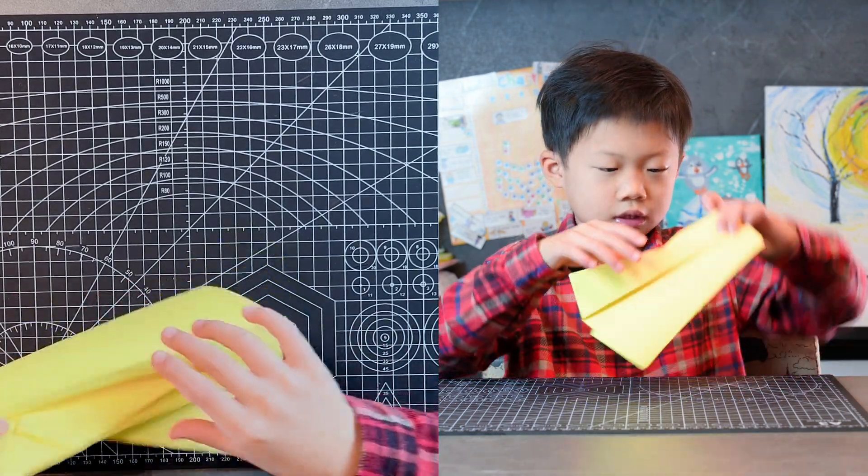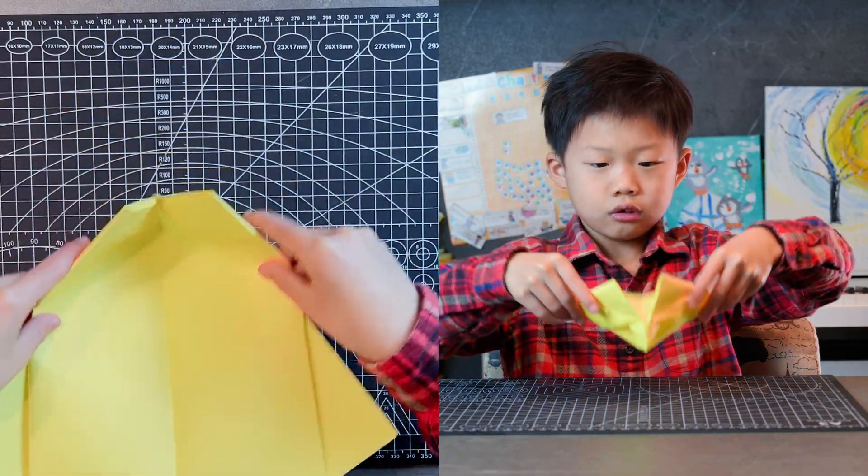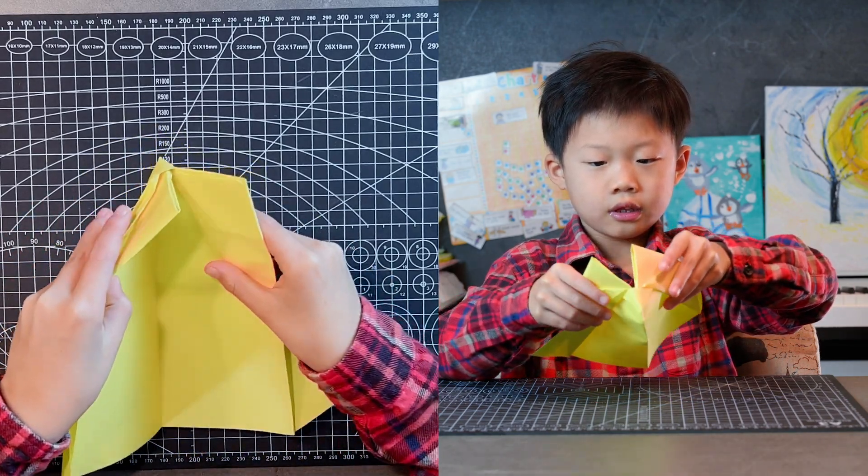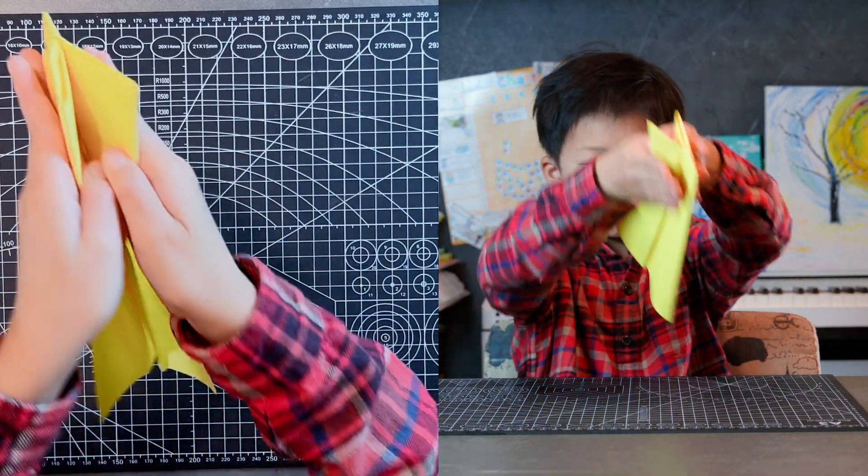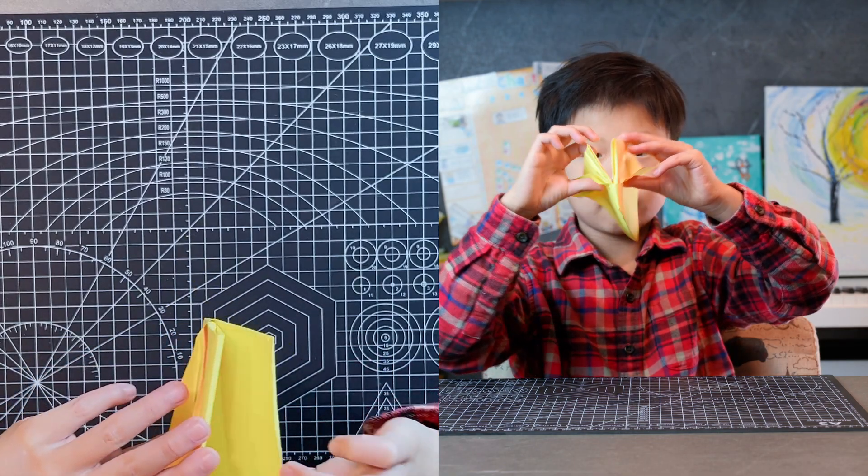And then, this is something hard. I need to get the paper off the table to explain this. First, you need to kind of, like this, pull the paper apart.